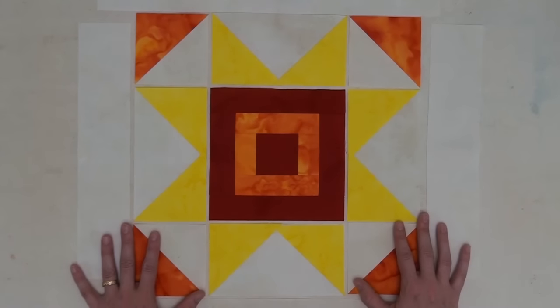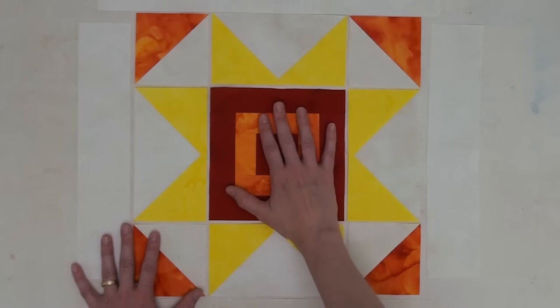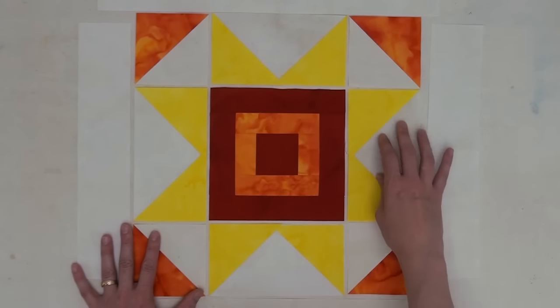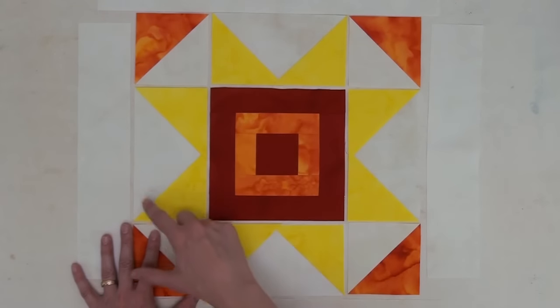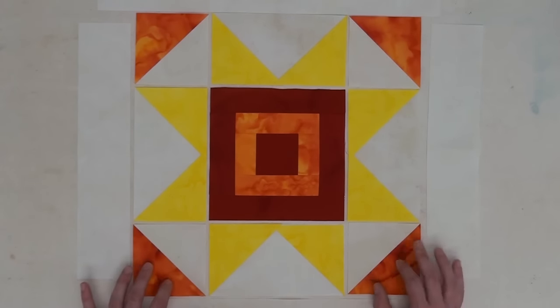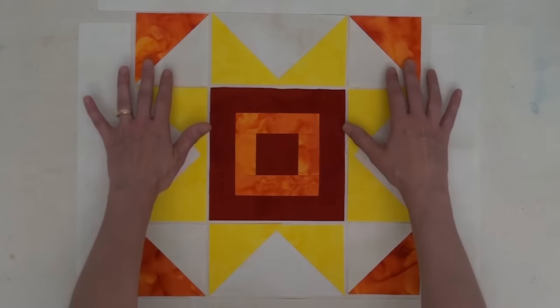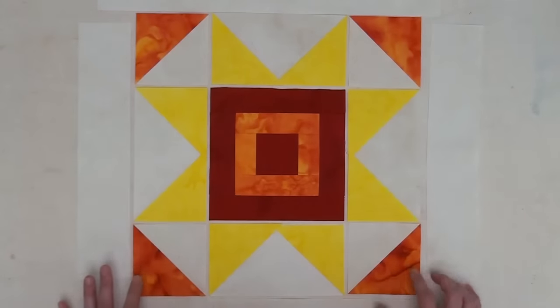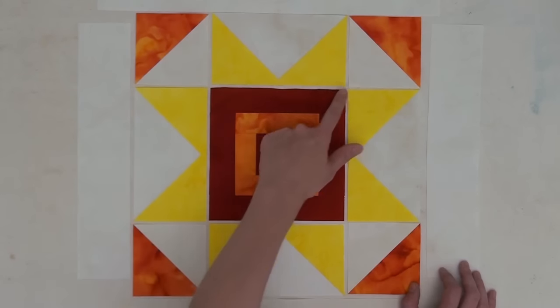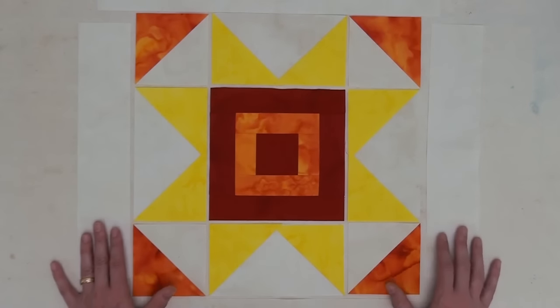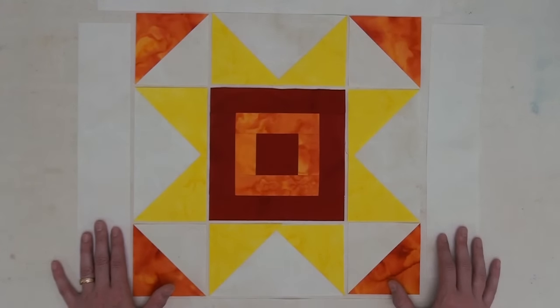So here are all of our units laid out on our block. We've got our log cabin right in the center, we've got flying geese all around and make sure they are pointing this way so it's kind of like we're producing a sawtooth star. And then we have our half square triangles in the corners with the fabric B triangles facing out. And this is our layout so the next step will be to piece the units together into rows then piece those rows together matching those seam lines and then attach your borders and your block will be complete.